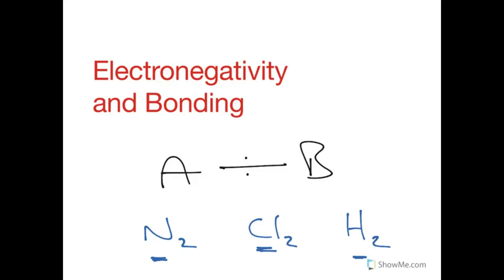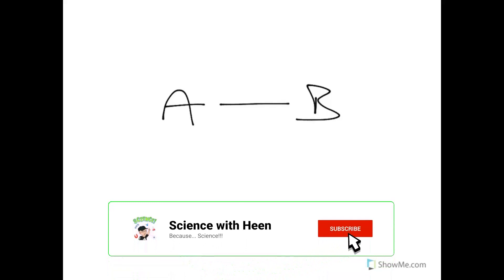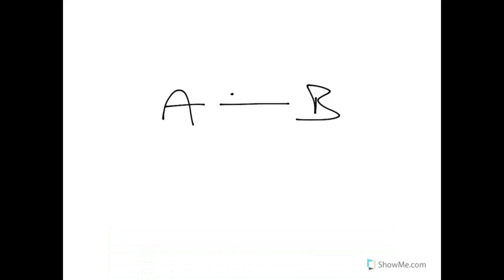But what if one atom had a slightly greater attraction for the bonding pair of electrons than the other? If we go back to our A and B atoms, there's your bond. But if atom A has a stronger electronegativity, the electrons won't be found on average in the middle between the atoms. They will actually spend more time associated with atom A. So we could draw them here, closer to atom A.